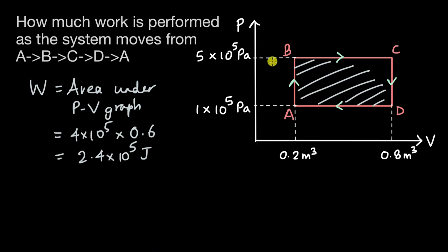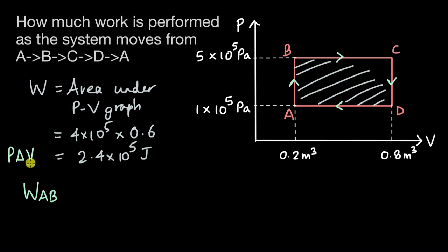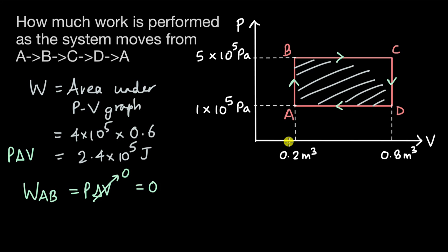Now let's also look at the individual processes. For process AB, there is no change in volume. So if we think about P·ΔV, delta V is just 0. So the work done in this process is 0. This is an isochoric process — the volume doesn't change, only the gas pressure is changing.